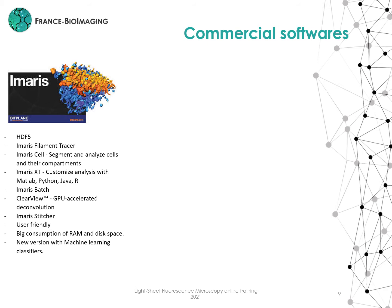The first one is Imaris. Imaris uses HDF5 format. This includes some tools such as Filament Tracer, Imaris Cell that allows segmented analysis in cells and compartments, and Imaris XT, which allows you to do customized analysis in MATLAB, Python, and Java. There is also the option of batch analysis, and another tool is ClearView for deconvolution. Imaris is quite user-friendly but requires a lot of RAM and disk space. There is a new version with machine learning classifiers.